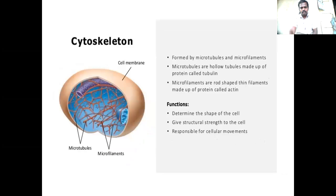The cytoskeleton is formed by microtubules and microfilaments. Microtubules are hollow tubules made up of a protein called tubulin. Microfilaments are thin filaments made up of a protein called actin. Their functions are to determine the shape of the cell, give structural strength to the cell, and be responsible for cellular movement. Thank you.